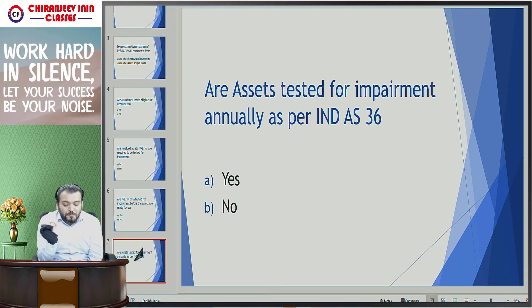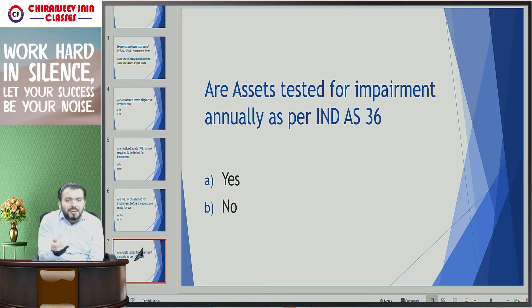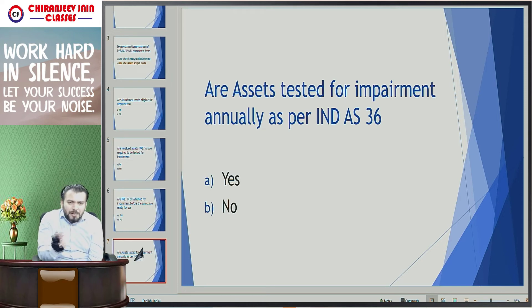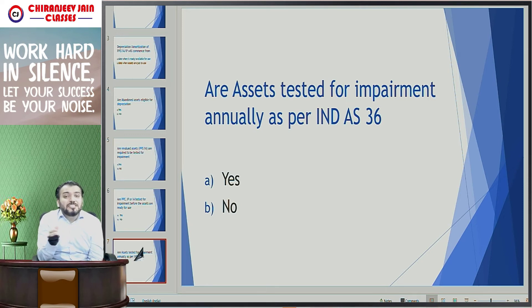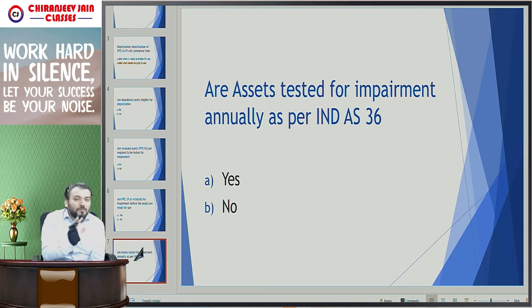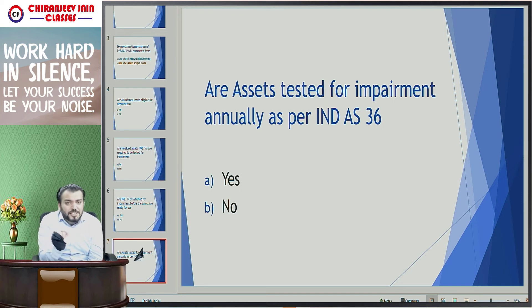What is the last question for the day? Are assets tested for impairment annually as per Ind AS 36? The general rule of Ind AS 36 is that normally an asset is tested for impairment only when there is an indicator of impairment. But there is one exception to this rule: there are three types of intangible assets which require impairment testing on an annual basis irrespective of any indicator. This exception applies only for intangible assets — not for property, plant and equipment, and not for investment property. Property, plant and equipment and investment property are tested for impairment only when there is an indicator.